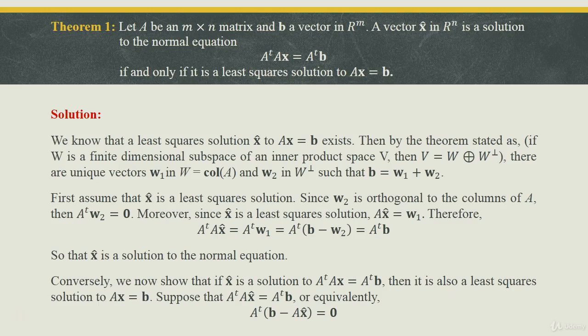If and only if x̂ is a least square solution to Ax = b. For the proof: we know a least square solution x̂ to Ax = b exists. By the theorem — if W is a finite dimensional subspace of an inner product space V then V = W ⊕ W⊥ — there exist vectors w1 in W (the column space of A) and w2 in W⊥ such that b = w1 + w2.